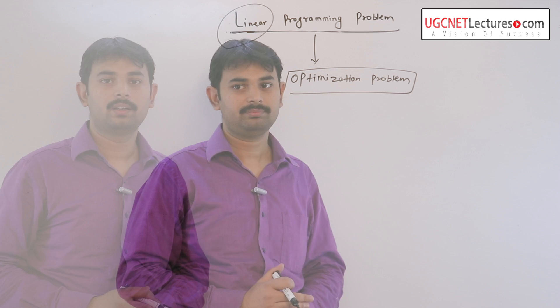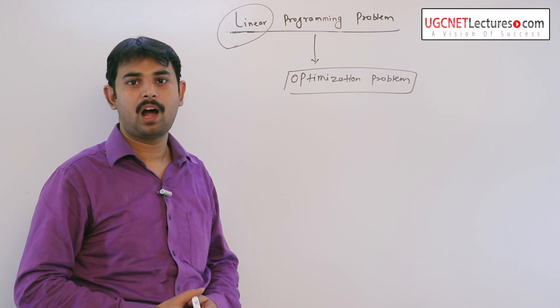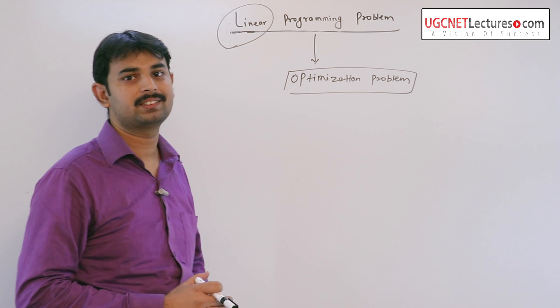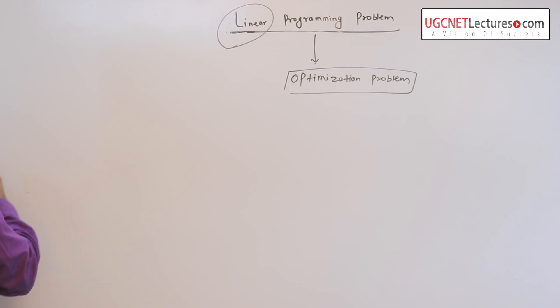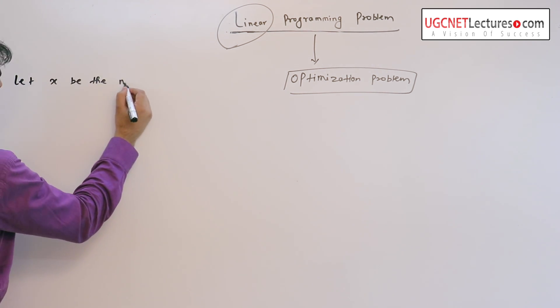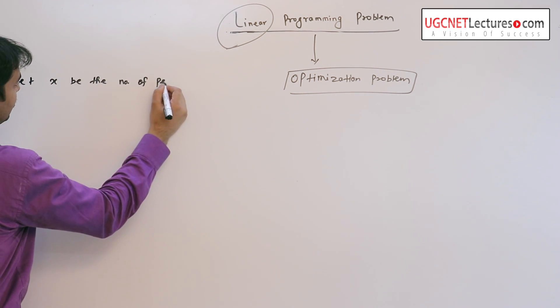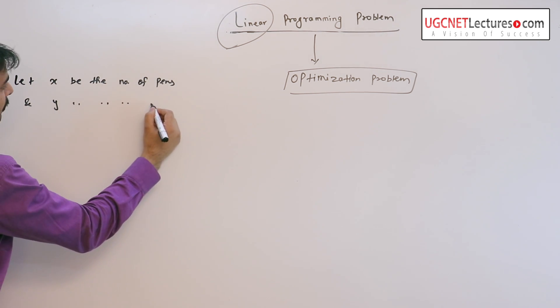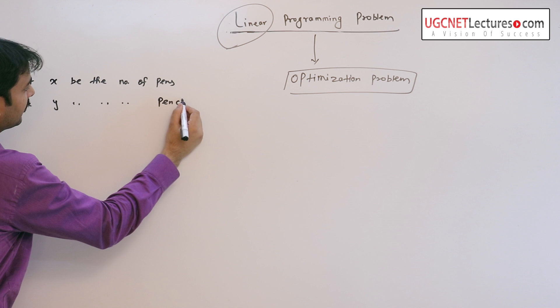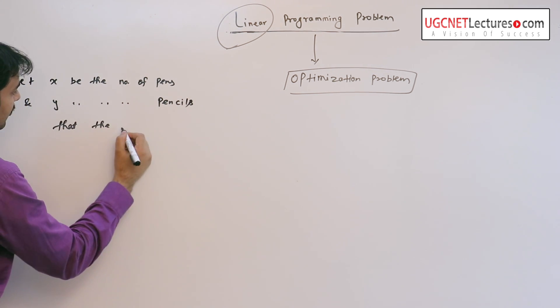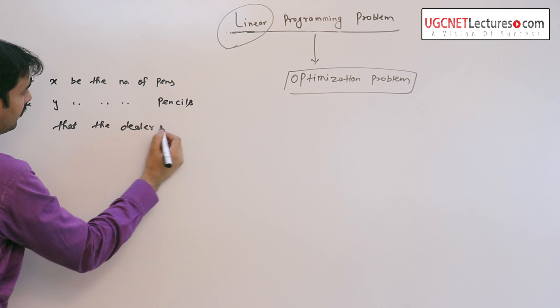Now I would like to show how a real life problem is linear programming problem. For this let us suppose let x be the number of pens and y be the number of pencils that the dealer buys.